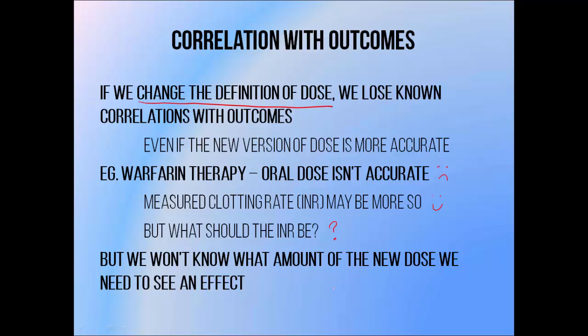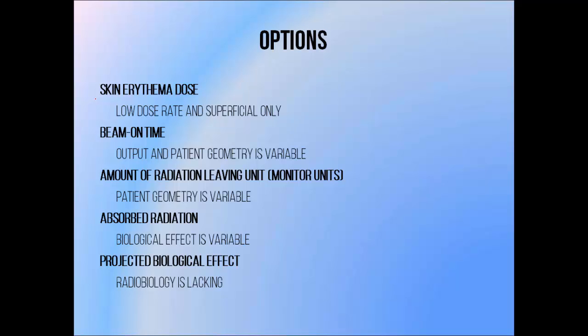A radiotherapy-relevant example of this would be the current move towards calculating dose to medium as opposed to dose to water in radiotherapy treatment planning. This stems from the fact that for many years our treatment planning systems were unable to account for differences in atomic composition in patient tissues when calculating doses. Many of them are now able to do so, providing more accurate calculations of radiation dose to patients. But the relationship between these doses and treatment outcomes may be altered. The accuracy of the quantity used to represent radiation doses evolved considerably.